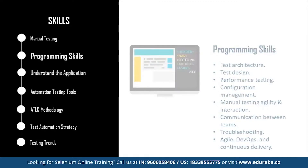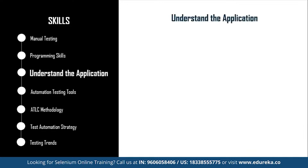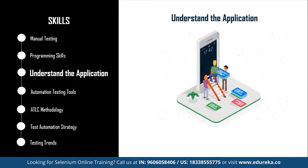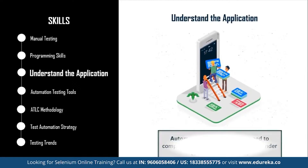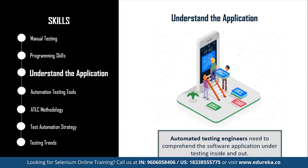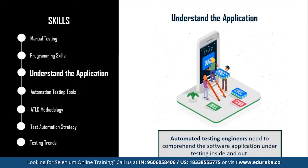Next is understanding the application. The common application details every automation tester needs to know include which programming languages were used to develop the application, on what platform the application is built, which databases are involved, whether there are any web services or APIs connected to different parts of the system, and more. Make sure you are completely thorough with the application you are going to test via automation testing.